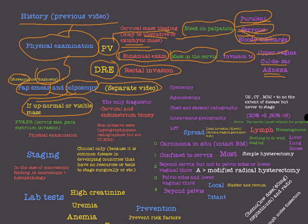If we have an abnormal Pap smear or a visible mass seen on physical examination, then we must move to cervical biopsy — but not just cervical biopsy, also endometrial biopsy. This is because the source of the cervical mass may be endometrial, descended from the cervix, and we cannot know without biopsy. Cervical and endometrial biopsy is the only diagnostic test in this case. Pap smear and colposcopy are not diagnostic.